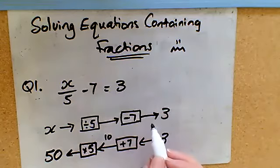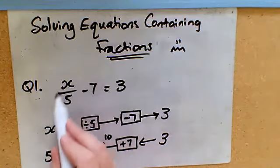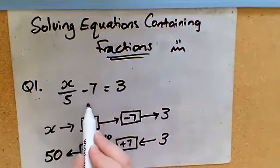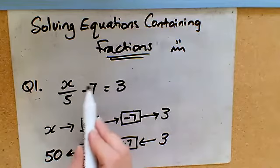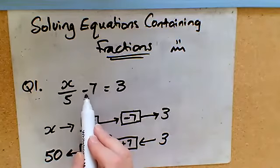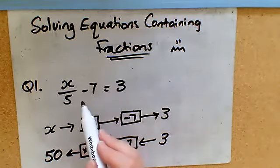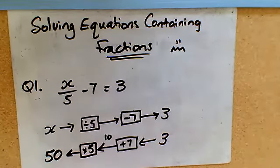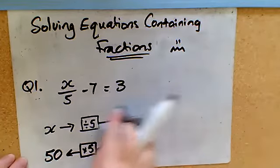So the important thing to remember is what do we undo first. We always undo the last thing that happened to x, and the last thing that happened to x following BIDMAS would have been we would have subtracted the 7. So try and think of it as BIDMAS backwards.